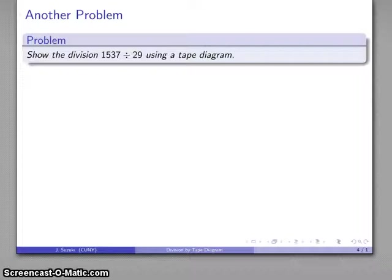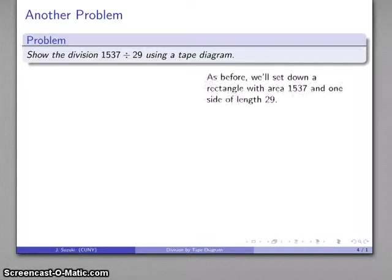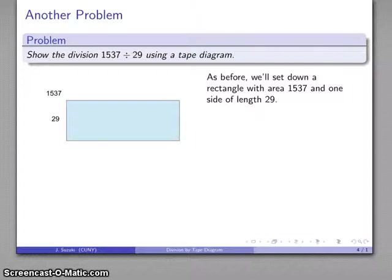Well, let's do a more complicated problem: 1537 divided by 29. Again, it's worth noting that at this point we have not yet examined the standard algorithm for division. We don't have a process for dividing by two-digit numbers. No problem, we can still do this. I have an area of 1537 and one side has length 29.